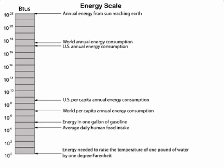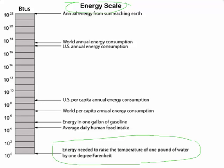What we are looking at here is energy scale. Energy scale basically gives us different things, or it puts different energy consumptions in perspective. For example, a BTU is defined as the energy required to raise the temperature of one pound of water through one degree Fahrenheit. This is a small amount of energy — it is one single BTU, that is the unit.